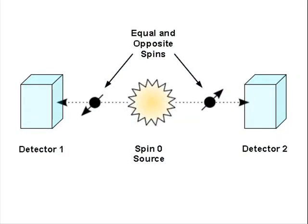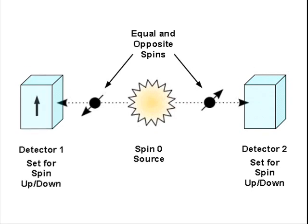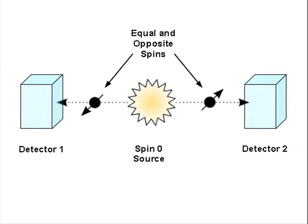Think of a spin-zero particle that is decaying into two electrons. In order to conserve angular momentum, the spins of the electrons must be equal and opposite. If we set up both of our detectors in the same way, so as to measure, for example, spin up and spin down, if one measures spin up, the other will measure spin down. The total measured angular momentum is zero, and we're happy because the law of conservation of angular momentum holds.